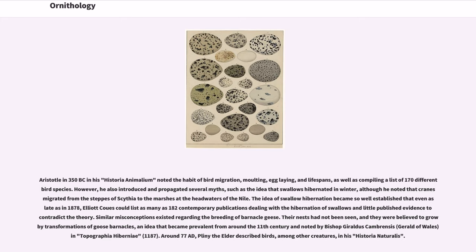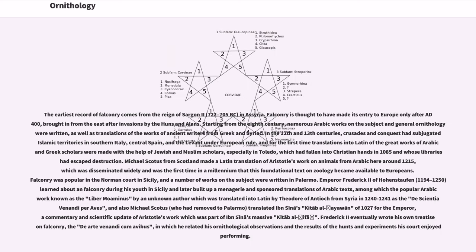Around 77 AD, Pliny the Elder described birds, among other creatures, in his Historia Naturalis. The earliest record of falconry comes from the reign of Sargon II in Assyria. Falconry is thought to have made its entry to Europe only after AD 400, brought in from the east after invasions by the Huns and Alans. Starting from the 8th century, numerous Arabic works on the subject and general ornithology were written, as well as translations of the works of ancient writers from Greek and Syriac.